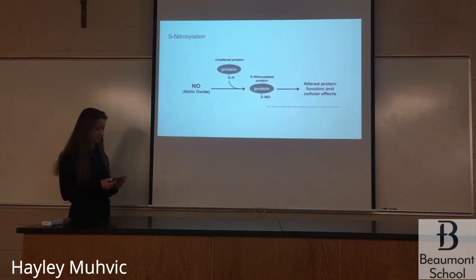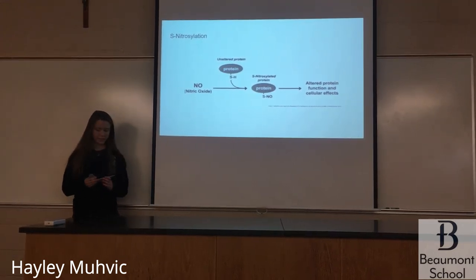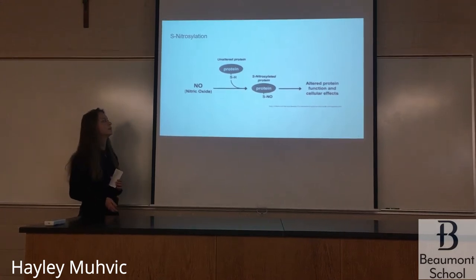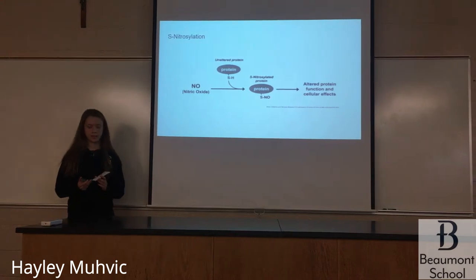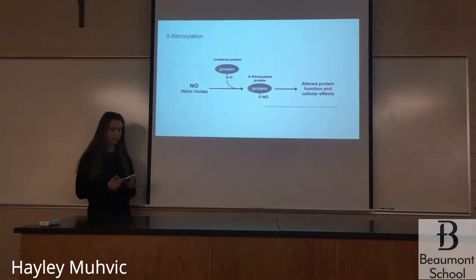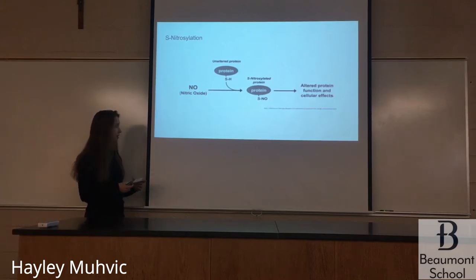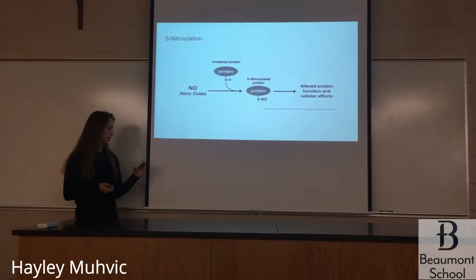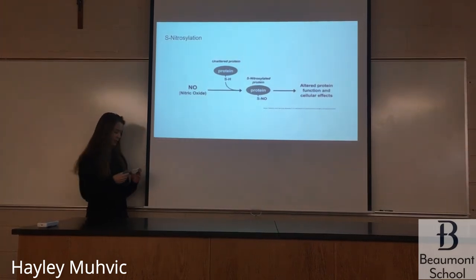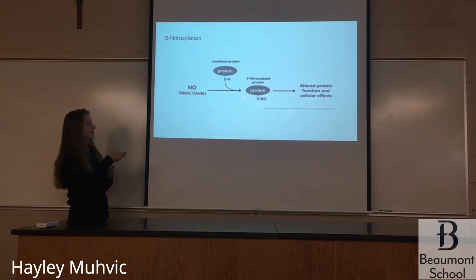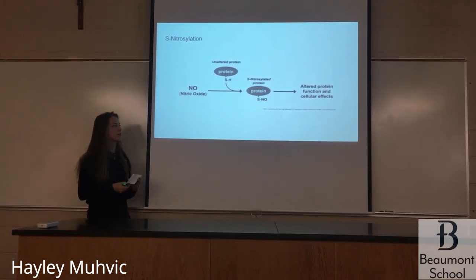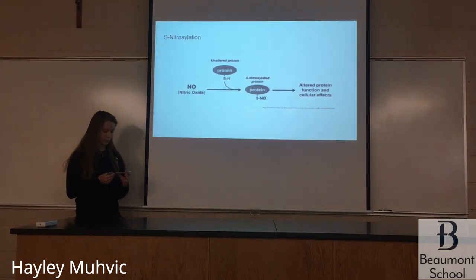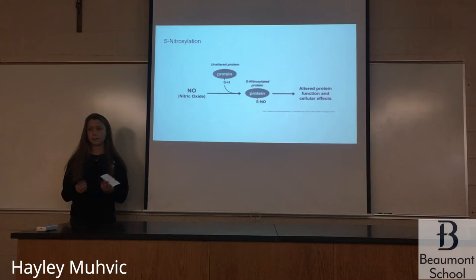S-nitrosylation is a protein modification that changes the protein's function. Proteins are made up of different amino acid chains. This is an example of hemoglobin S-nitrosylation — a very classic example. The modification happens on the cysteine chain. You can see in the diagram an unaltered protein with a free thiol, the SH-thiol. Nitric oxide binds with it to form a SNO protein. When the modification happens, it delivers nitric oxide to the blood, which widens the blood vessels and increases blood flow — that's called vasodilation.